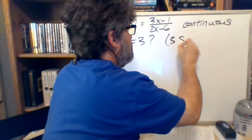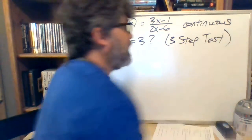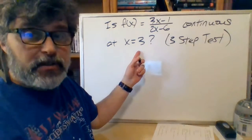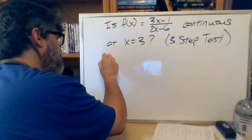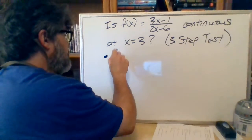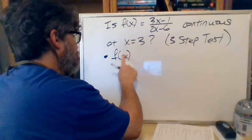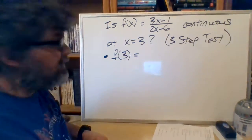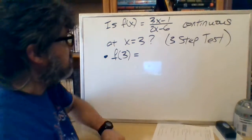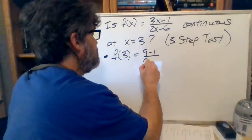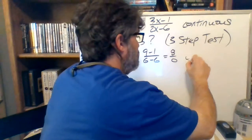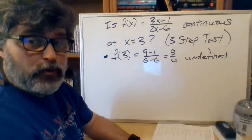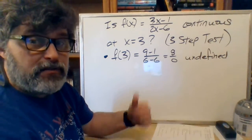This method is called the three-step test for continuity at a point, because we're only doing this at x equals 3. Step number one: does the function exist at the point you're trying to investigate? Is there an f(3)? I plug it in and I get (9 minus 1) over (6 minus 6), which is 8 over 0. This is undefined — no. And as you've known from graphing these for years, what I'm going to have is a vertical asymptote, a discontinuity.